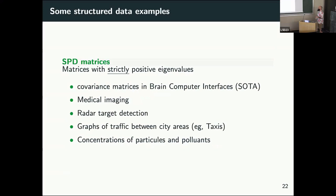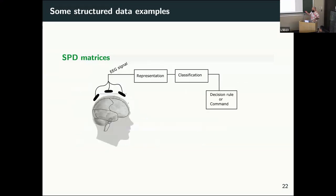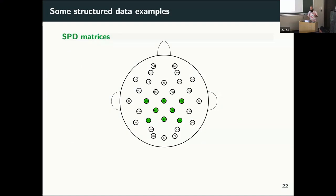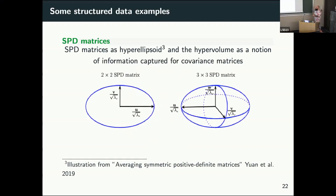Another example that I'll use a bit more is the space of SPD matrices — matrices with strictly positive eigenvalues. We find these as covariance matrices in multi-sensor signals and EEG. For EEG applications, you can think about SPD matrices as hyper-ellipsoids in some kind of space — they have a shape. If we use Euclidean geometry between those ellipsoids, so A plus B over 2 as a classical average, the resulting matrix is inflated — its determinant is way bigger than A and B. When we are averaging, we don't want to add information, so this swelling effect is an artifact of the Euclidean averaging.